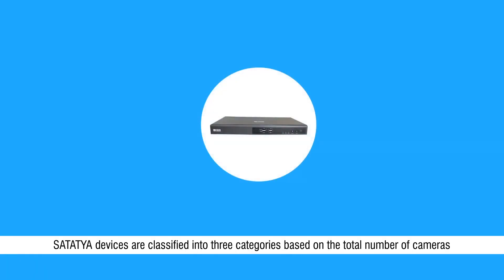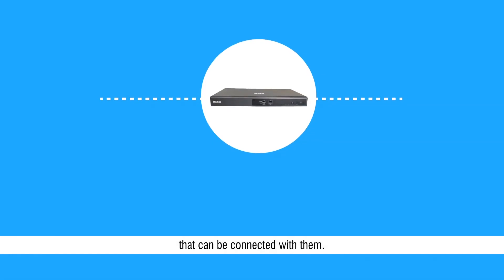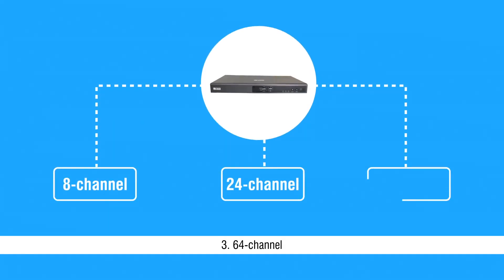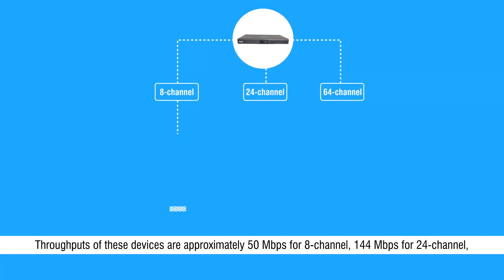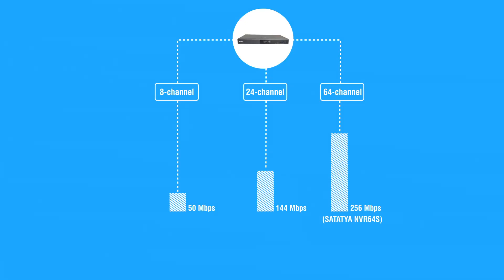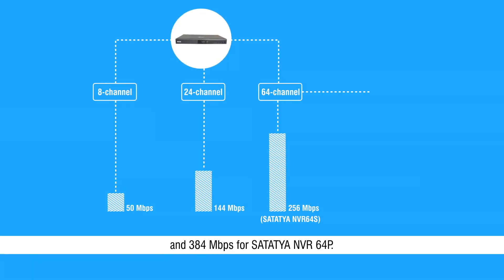Satathya devices are classified into three categories based on the total number of cameras that can be connected with them: first 8-channel, second 24-channel, and third 64-channel. Throughputs of these devices are approximately 50 Mbps for 8-channel, 144 Mbps for 24-channel, 256 Mbps for Satathya NVR-64S, and 384 Mbps for Satathya NVR-64P.